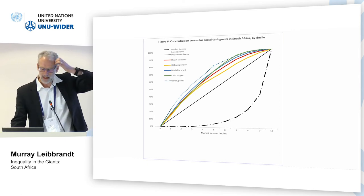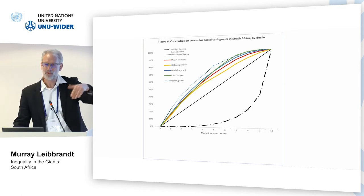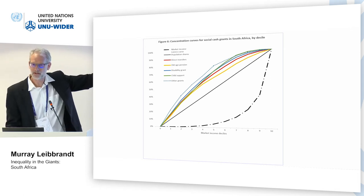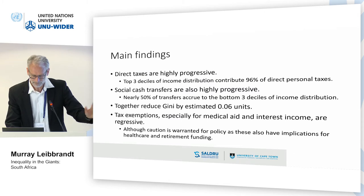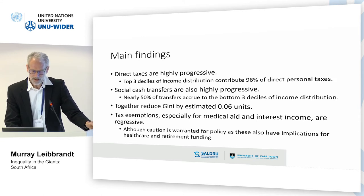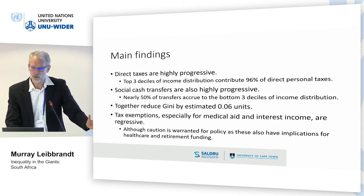The big picture coming out of this is that our cash transfers are very focused on the bottom end of the distribution — they're very pro-poor — and that affirms the household level study we started with. Now we've dived into government admin data combined with survey data, part of the richness of the study. Our main findings: our taxes are progressive, with the top three deciles contributing 96% of personal taxes; our cash transfers are highly progressive and reduce the Gini coefficient quite dramatically when done properly in the changes. Tax exemptions, however, are regressive.